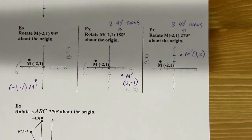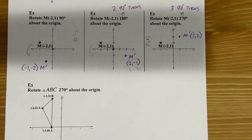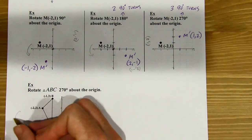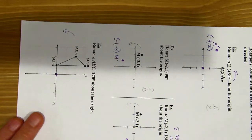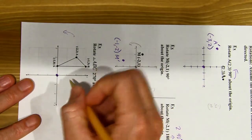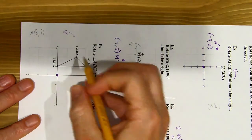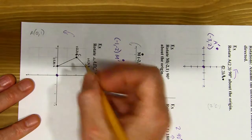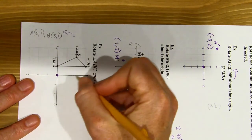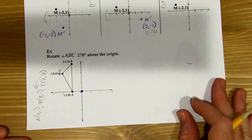We were just rotating a single point, but we can rotate an entire triangle or any polygon. This one goes about the origin, 270 degrees — three turns. I rotate the paper: one, two, three. I make notes because I'll forget. A ends up at (0, 1). I have two different A's here, so let's make this one C. B is going to be at (3, 1), and C is going to be at (2, 2). I flip the paper back and plot all the new points.